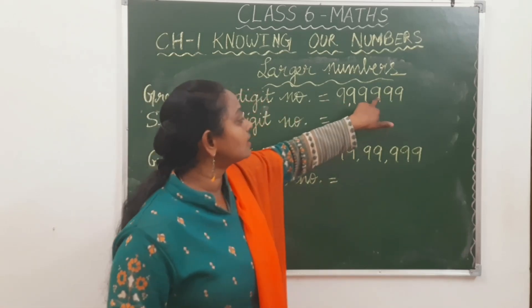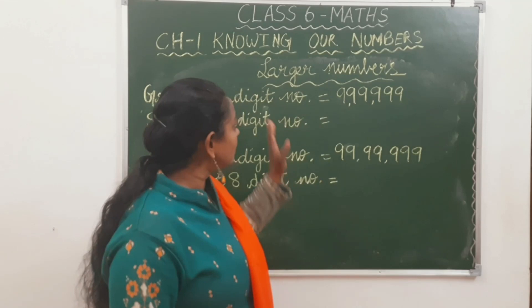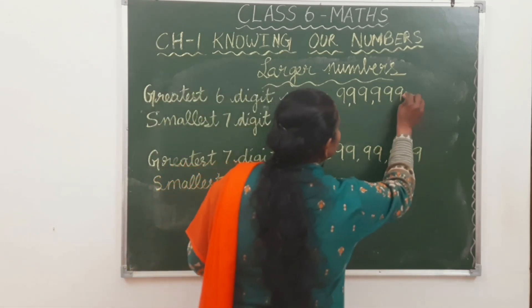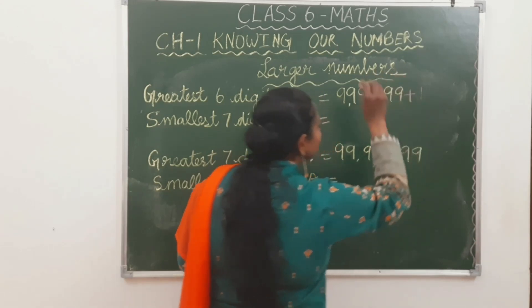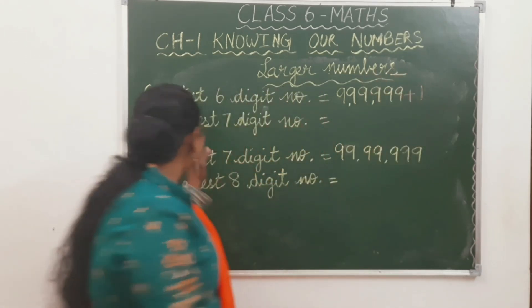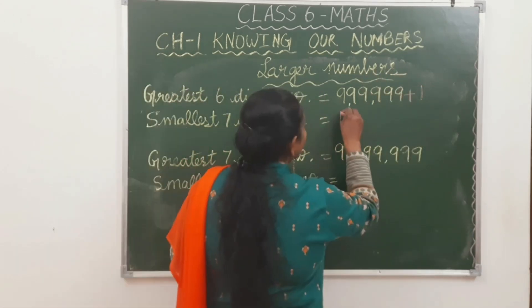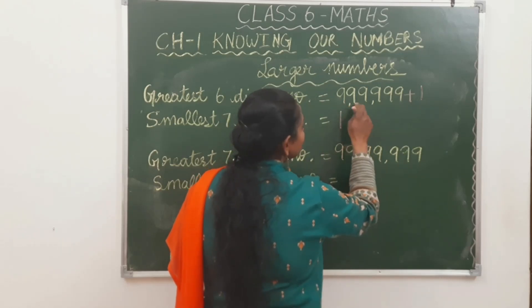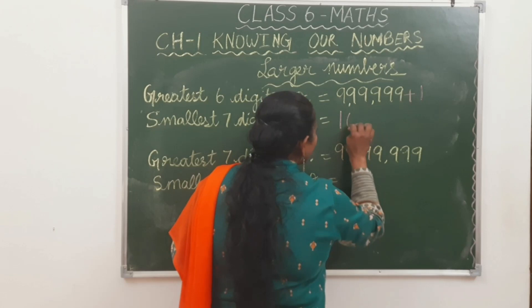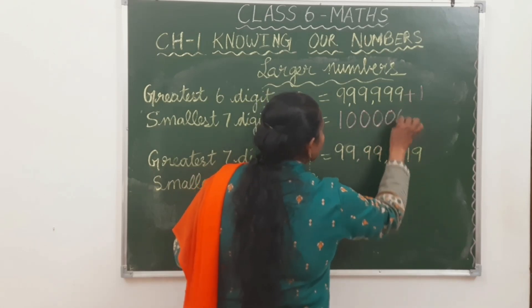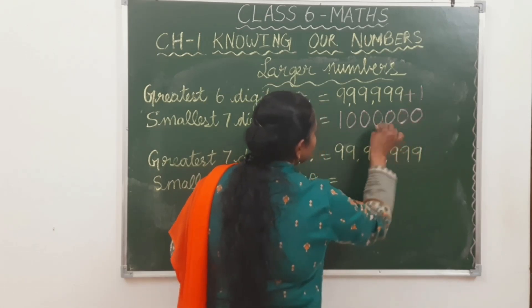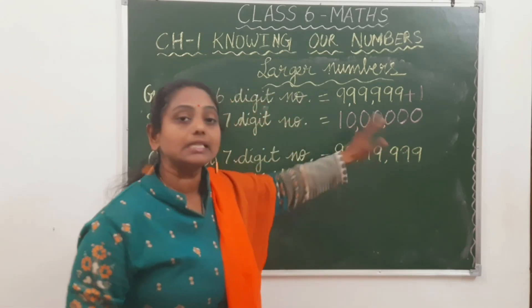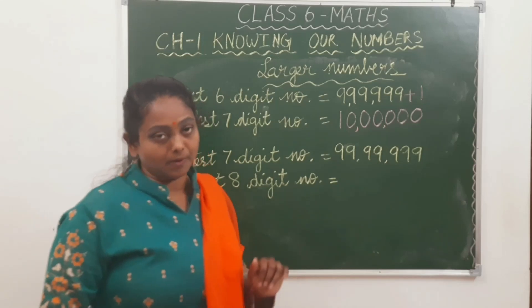The greatest 6-digit number is 9,99,999. If you add 1 to this number, you will get the smallest 7-digit number: 10,00,000 — that is 10 lakh. 10 lakh is the smallest 7-digit number. The greatest 7-digit number is 99,99,999. Adding 1 gives you the smallest 8-digit number: 1,00,00,000 — that is 1 crore.